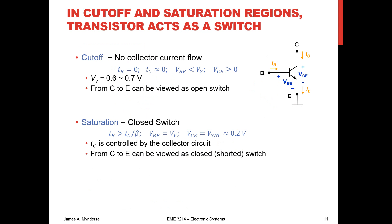In the cutoff and saturation regions — valve completely closed or completely open — the transistor is just a switch. Unlike the garden hose where you have to pass through intermediate regions, with a transistor we can bounce back and forth very quickly between no current flow and lots of current flow. It's not instantaneous, but very fast. This allows us to control our actuators nicely in a digital sense.